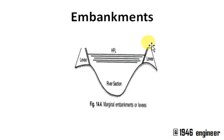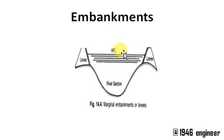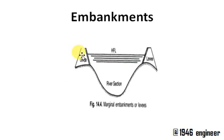The first type is embankments. These embankments are constructed along the river bed. During high flood level, these embankments protect the low-lying areas adjacent to the river. So embankments deal with the high flood level and fall under high water training.